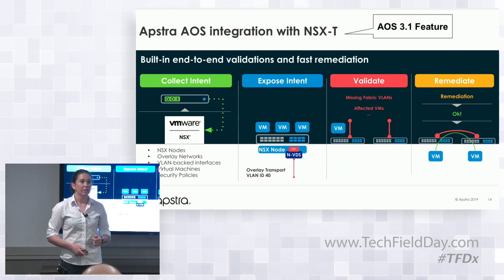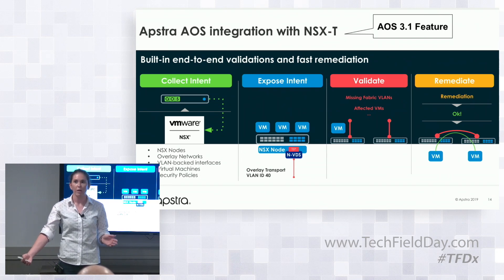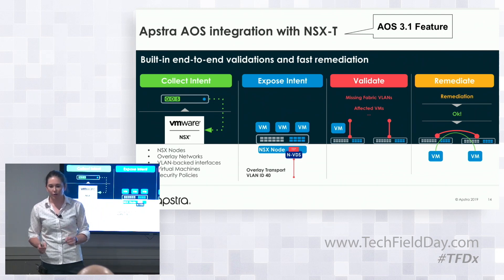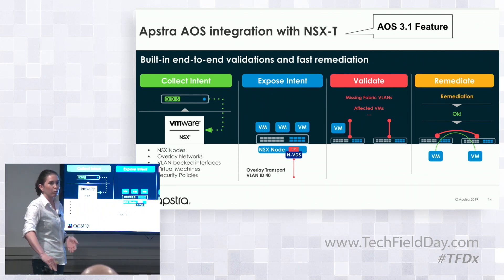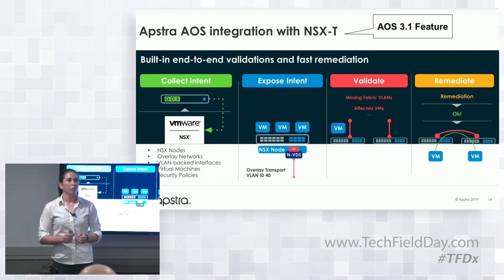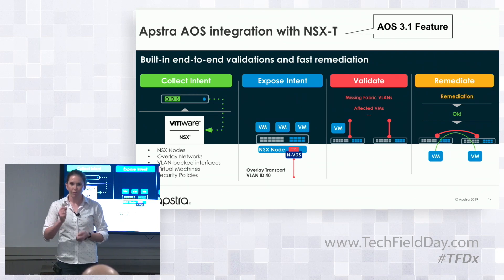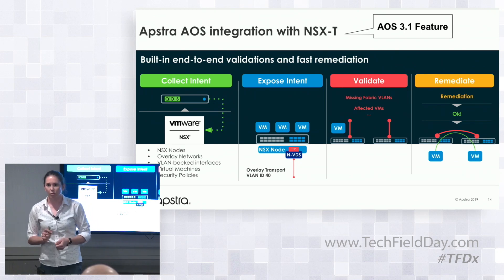I can immediately detect things like a VLAN mismatch — NSX-T says it has a VLAN-backed interface using VLAN 200, but I have no corresponding VLAN in my fabric using VLAN 200. That's probably impacting services right now. We also provide fast remediation workflows for everything we know how to resolve on the fabric — the user doesn't have to fix it manually, they can ask AOS for automatic remediation.